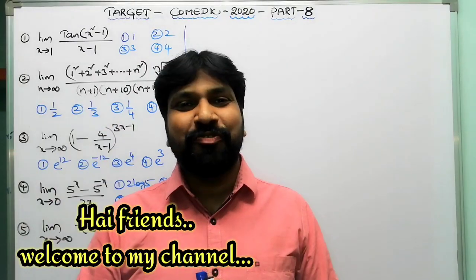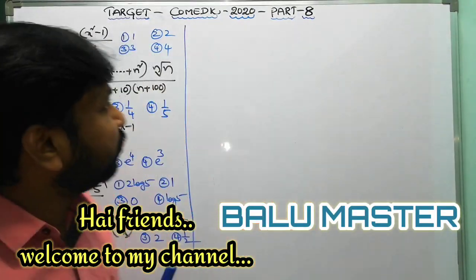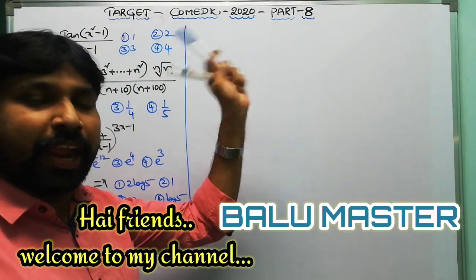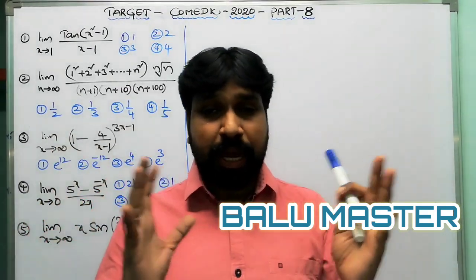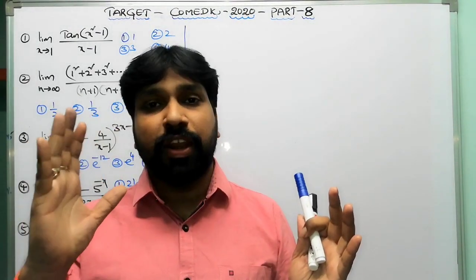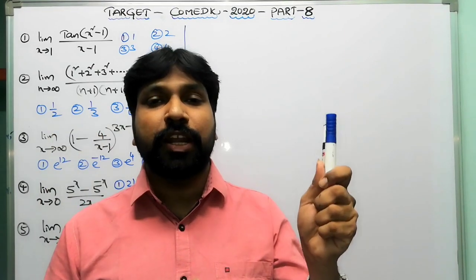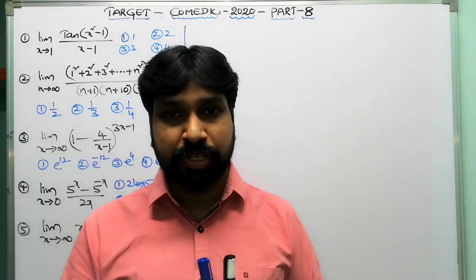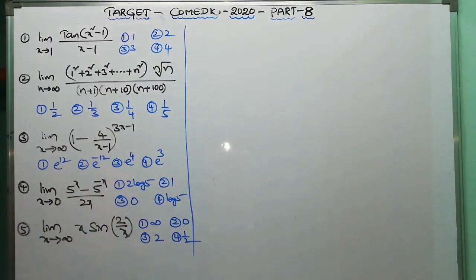Hi friends, good morning. Welcome to my channel Balumaster. Today I'm going to discuss Target Comet K 2020 Part 8. Today's topic is Limits and Continuity, from Differential Calculus. It's a very important topic — compulsory. From Limits and Continuity, they're asking minimum one question, maximum two questions. Let us start with the first question.